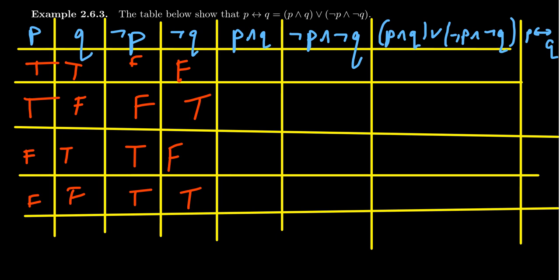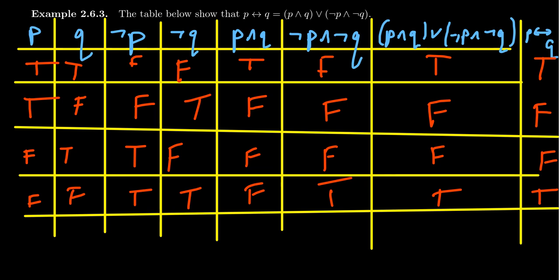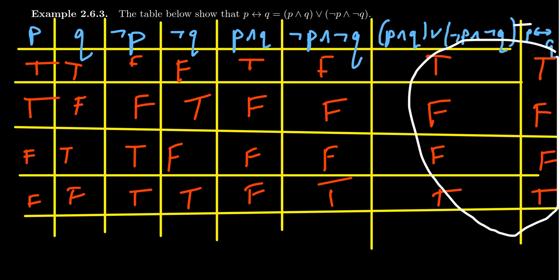Now we fill in the and statements. P and Q — and is true only if both are true — gives true, false, false, false. Not P and not Q gives false, false, false, true. This or statement: if any part is true, the whole thing is true, so (P and Q) or (not P and not Q) gives true, false, false, true. For the biconditional, it is true if both sides have the same truth value and false if they differ. Looking at P and Q: true-true gives true, true-false gives false, false-true gives false, false-false gives true. So the biconditional gives true, false, false, true. Comparing these two columns, we see they are the exact same thing: true, false, false, true. That proves these statements are logically equivalent.